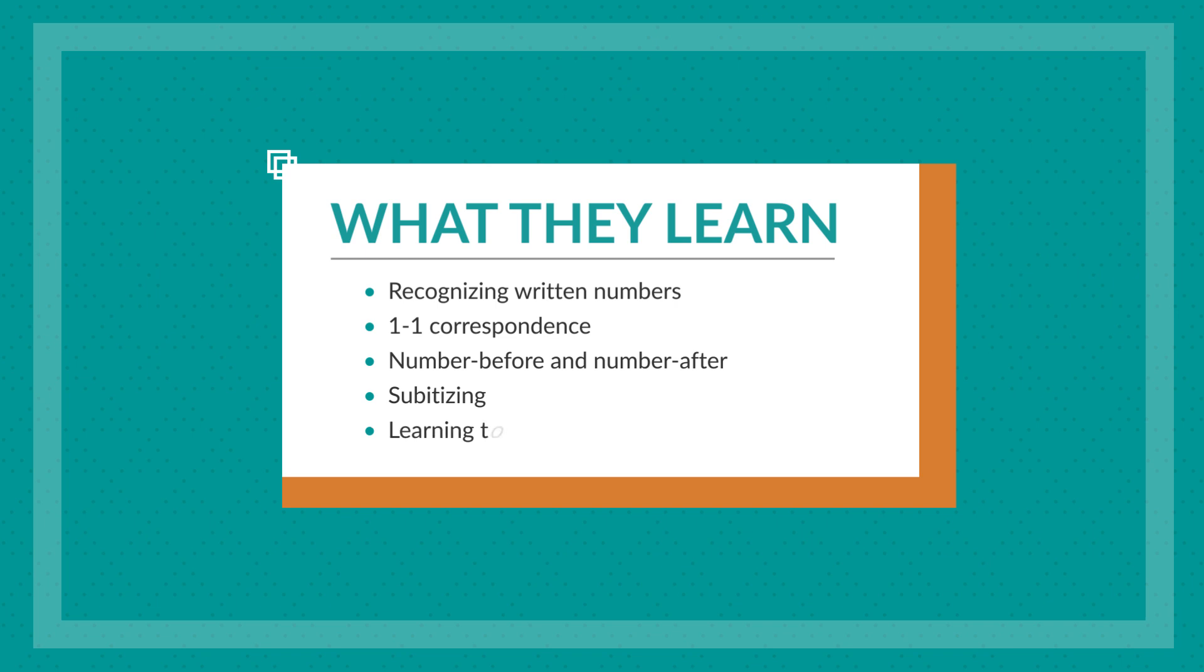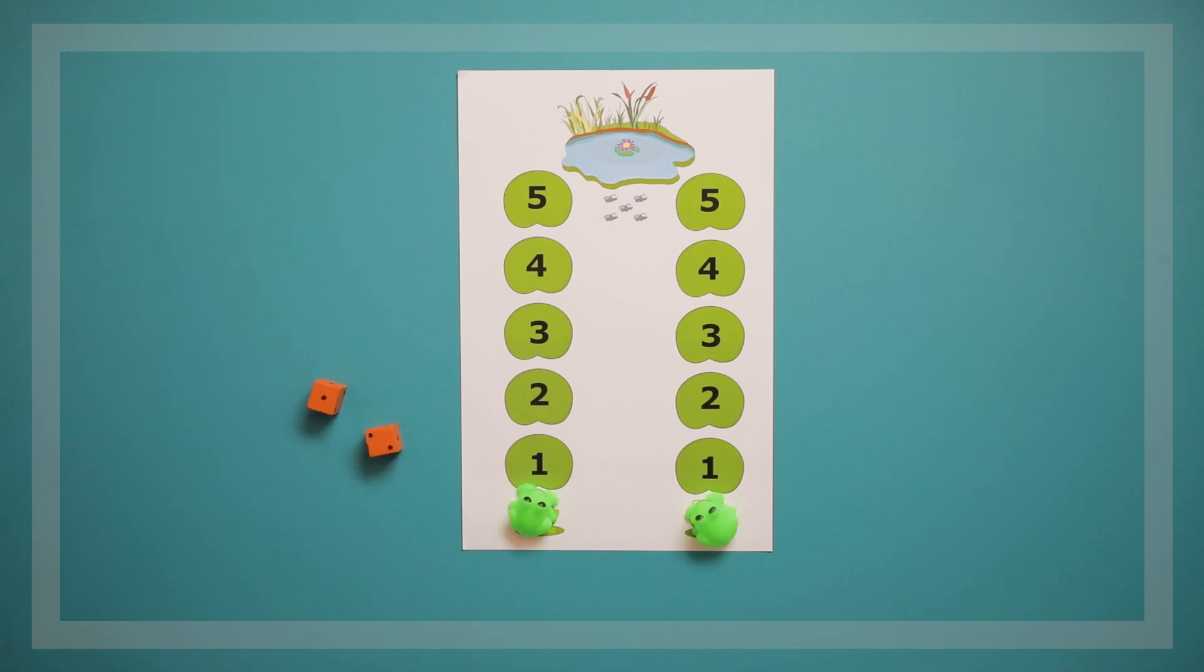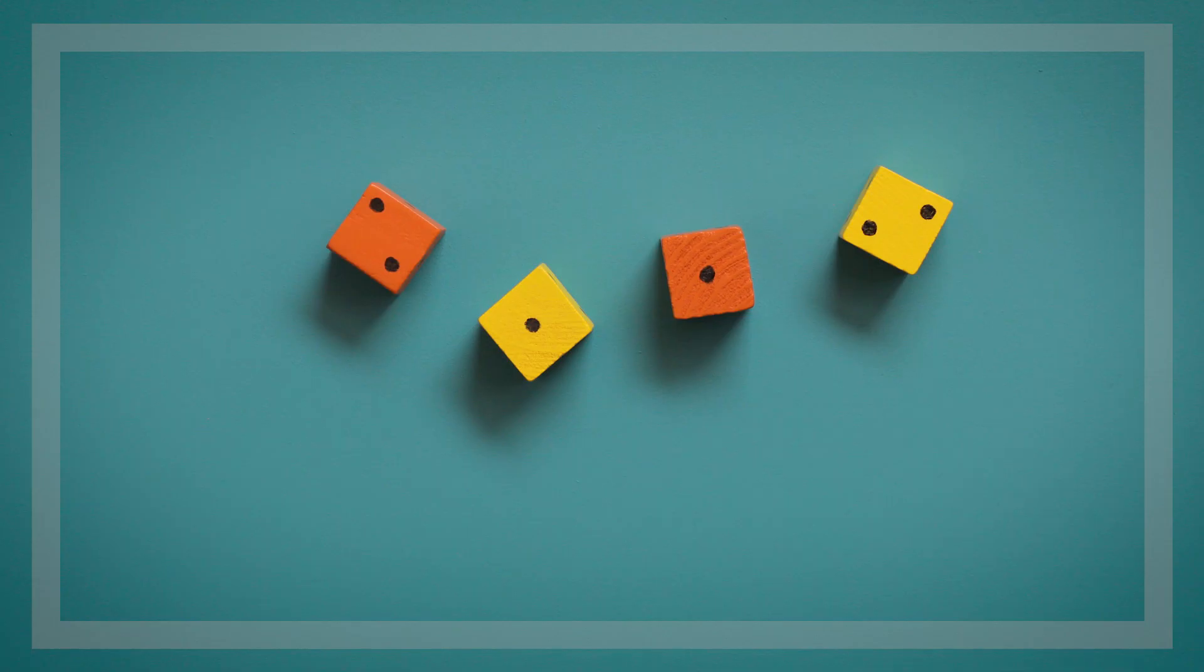They're also learning how to play a board game with a number path. To play Jumping on the Lilypads, we'll start with a 1-5 lilypad board. We'll use two frogs as our game pieces and one die.